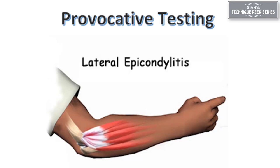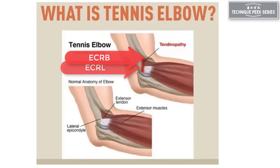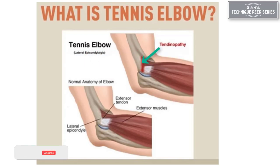Today we're going to talk about provocative testing for lateral epicondylitis and differential diagnosis for radial tunnel. Tennis elbow most commonly involves the ECRL and ECRB tendons. From overuse and repetitive strain, these tendons can become inflamed at the point of their insertion on the lateral epicondyle.